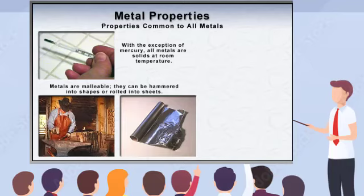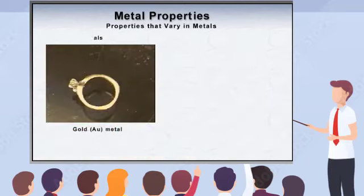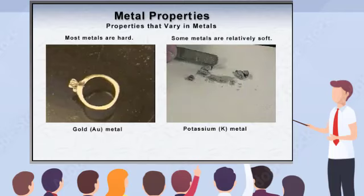Metals are ductile, which means they can be stretched and pulled into wire. Metals are typically hard, though some, such as the alkali metals, are soft enough to be cut with a knife. Also, as you might imagine with such a large number of elements, their chemical properties vary considerably.